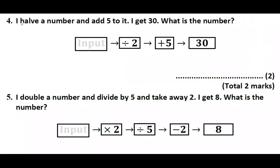Question number four. I halve a number and add 5 to it. I get 30. What's the number? So the number has been halved and then 5 is added and we get 30. Going backwards we subtract 5 and then multiply by 2. So 30 subtract 5 gives me 25, and 25 times 2 gives me 50. So the number must be 50.